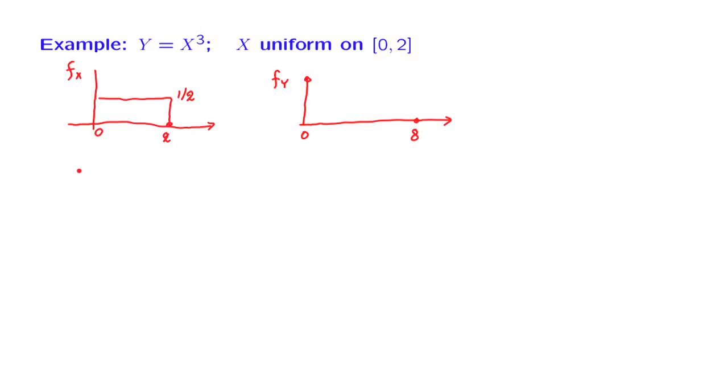The first step is to find the CDF of y. And since y is a specific function of x, we replace that functional form. And we write it this way. So we want to calculate the probability that x cubed is less than or equal to a certain number y. Let us take cubic roots of both sides of this inequality. This is the same as the probability that x is less than or equal to y to the 1 third.